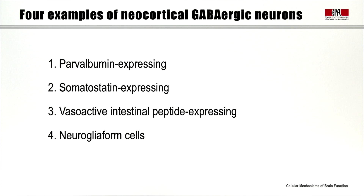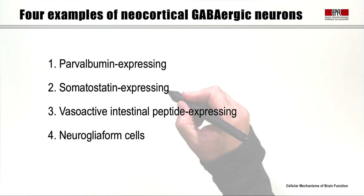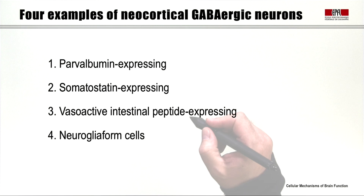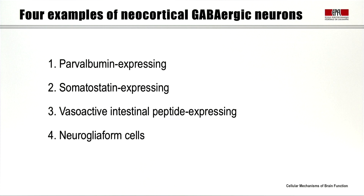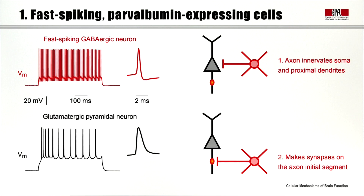In this video, we're going to consider four different types of GABAergic neocortical neurons. We'll think about three types defined through their expression of different marker genes: GABAergic neurons that express parvalbumin, others that express somatostatin, and others that express vasoactive intestinal peptide. These are non-overlapping expression patterns, so they're different classes of neurons that don't overlap. And finally, we'll talk about neurogliaform cells that at this time don't have a good molecular marker.